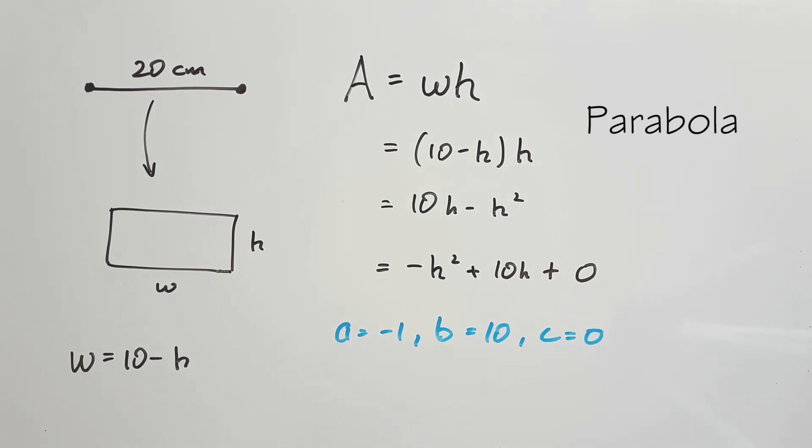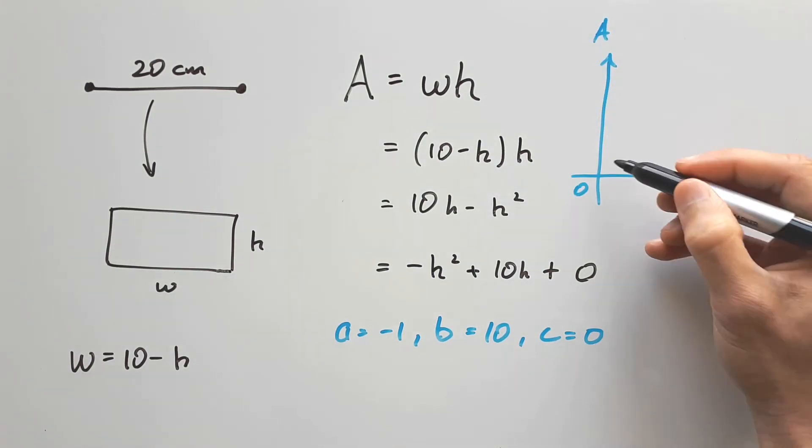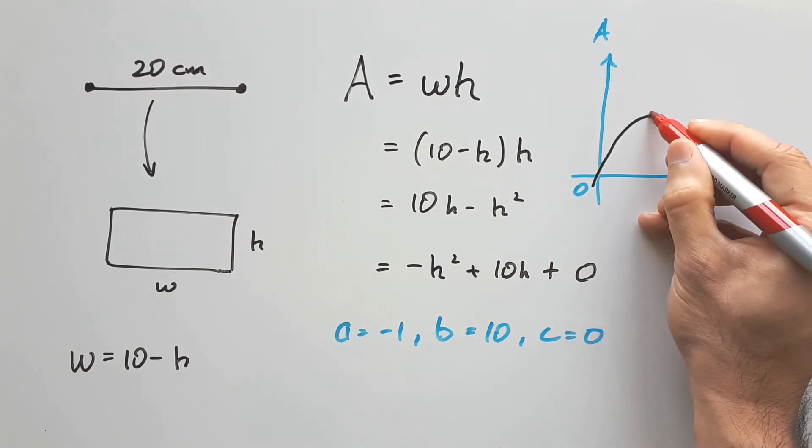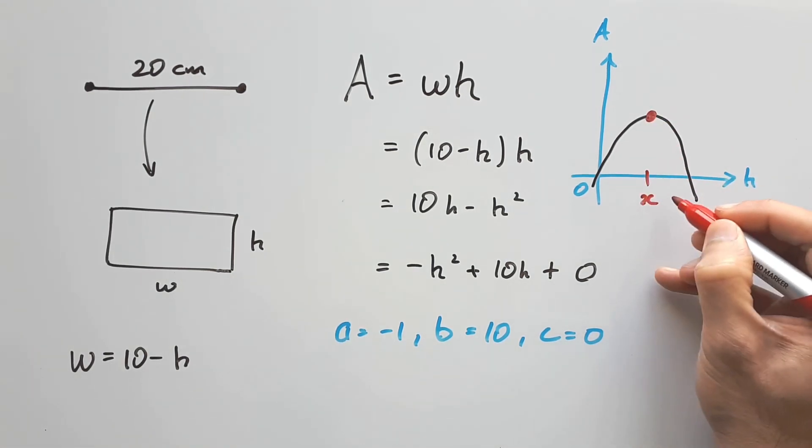There are at least three ways to draw a parabola, so if you would like to know more about that, let me know in the comments below. But just briefly, given that the a value is negative, it implies a negative parabola, with a maximum when the height is, say, x.